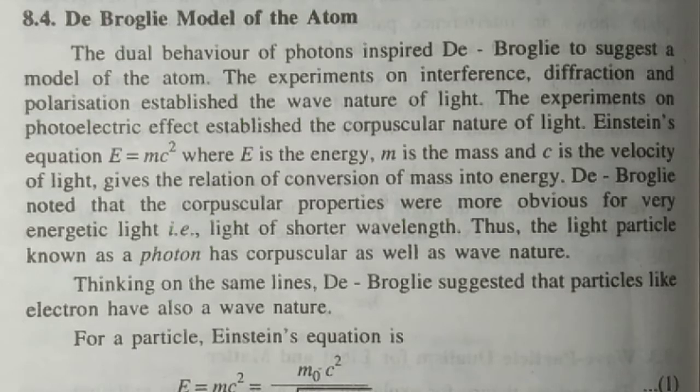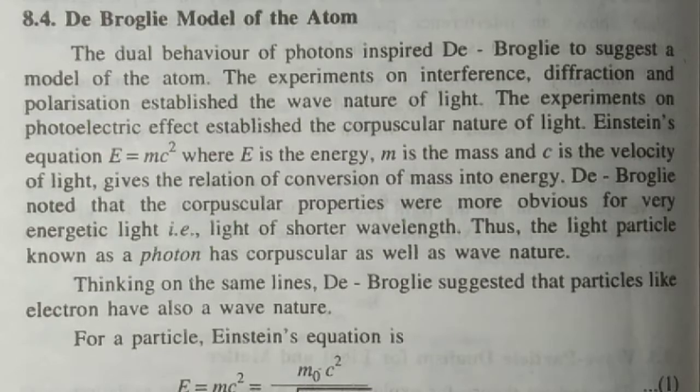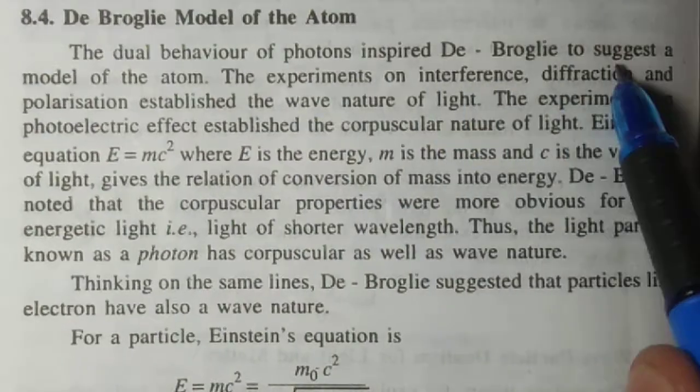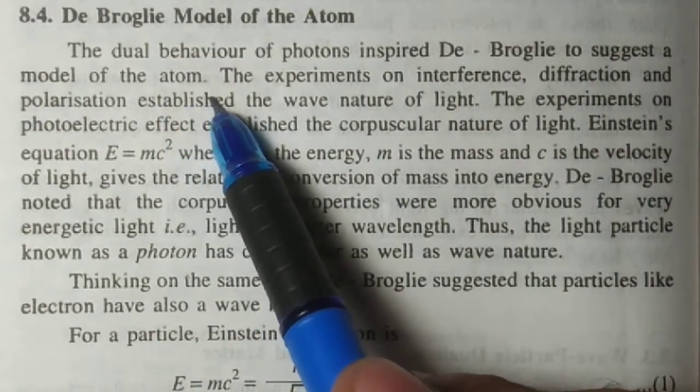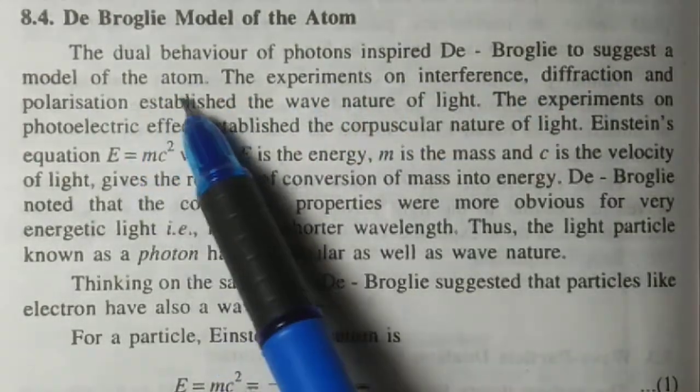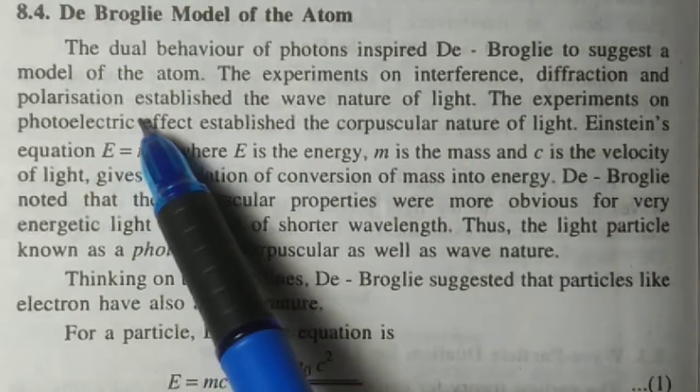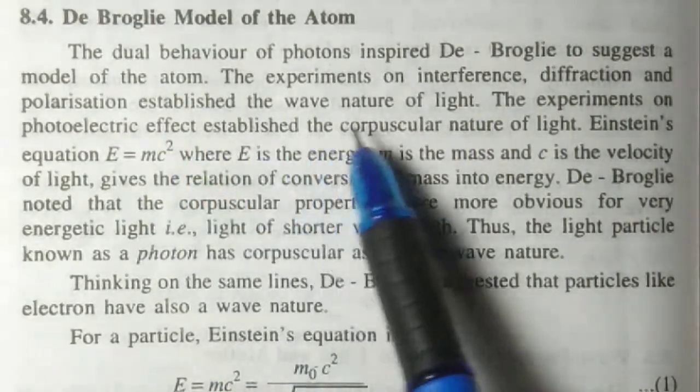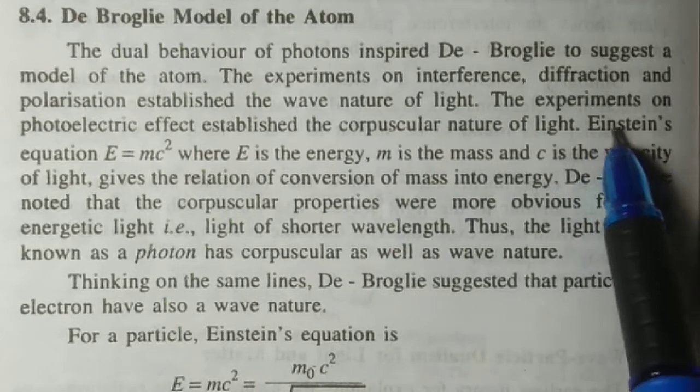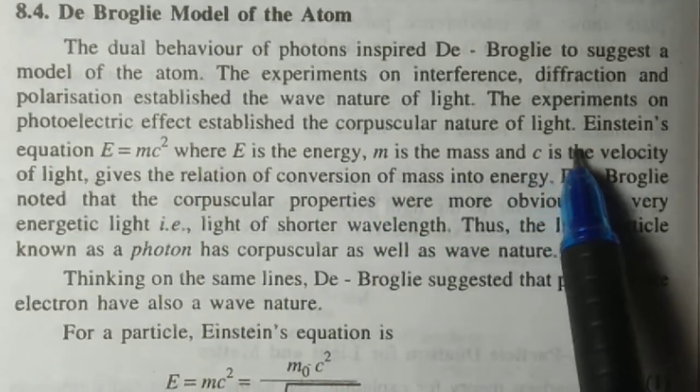The consequences are starting as electron has a dual nature, particle as well as wave nature. This idea inspired de Broglie to suggest a model of the atom. The dual behavior of the photon inspired de Broglie, and the experiments on interference, diffraction, and polarization established the wave nature of light.